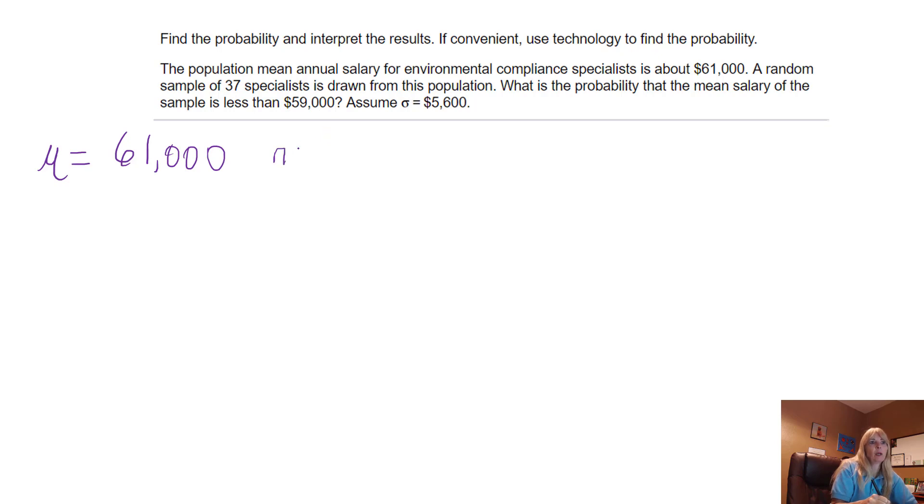A random sample of 37 specialists is drawn from this population. What is the probability our random variable, which is our mean, is less than $59,000? And we're given the population standard deviation σ is $5,600.